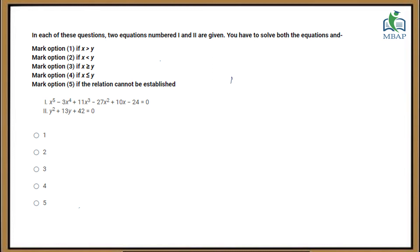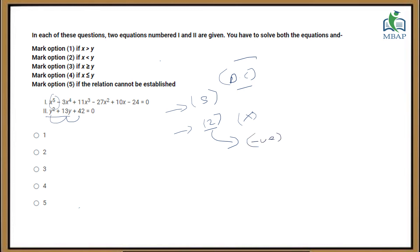Let's solve one more data comparison question. Here I have two equations: the first is a degree-5 polynomial which will have five roots, and the second is a quadratic equation which will have two roots. Looking at the second quadratic equation, the signs go plus to plus, plus to plus — there is no sign change, which means both roots will be negative. Looking at the first equation with five roots, the signs change as: plus to minus, minus to plus, plus to minus, minus to plus, plus to minus — there are five sign changes, which means all five roots will be positive.